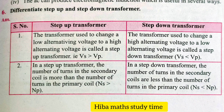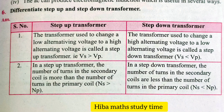Differentiate step-up and step-down transformer. A step-up transformer is used to change a low alternating voltage to a high alternating voltage, where VS should be greater than VP. A step-down transformer is used to change a high alternating voltage to a low alternating voltage, where VS is less than VP.